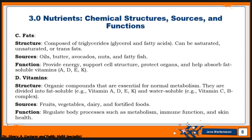The next nutrient is vitamins. By structure, vitamins are organic compounds that are very key and essential for normal metabolism. You can't talk about the metabolic pathway without mentioning vitamins, because organic compounds play important roles in the body. Sources of vitamins include fruits, vegetables, dairy, and fortified foods. Vitamins help regulate body processes such as metabolism in conjunction with fats, and also support immune function.